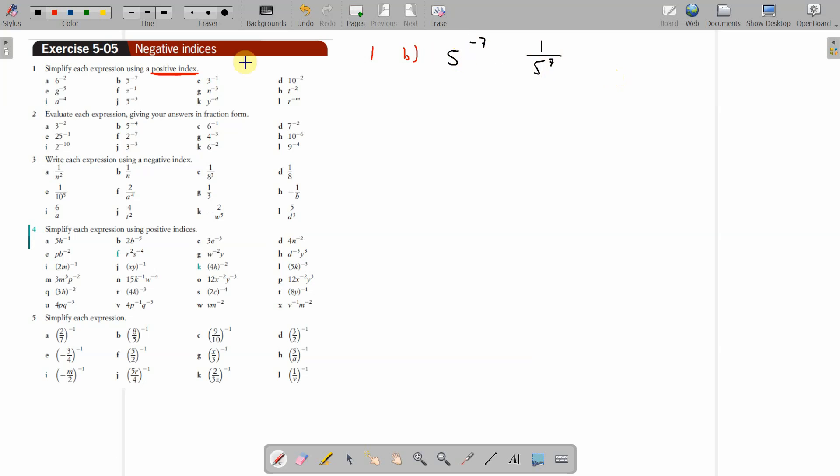Very simply, all you do as soon as you see that negative index, that becomes the reciprocal, or 1 over 5, and then this negative index becomes a positive one. 1 over 5 to the power of 7. That is the same as that.